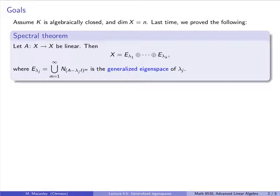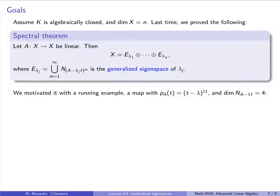Last time, we proved the spectral theorem and stated it in terms of generalized eigenspaces, something we defined at the end of last lecture. Namely, if A is a linear map, then X decomposes as a direct sum of generalized eigenspaces E-lambda-1 up to E-lambda-k, which are the union of the null spaces of A minus lambda-j-I to the m. We motivated this with a running example featuring a linear map with characteristic polynomial (t minus lambda) to the n and four genuine eigenvectors.